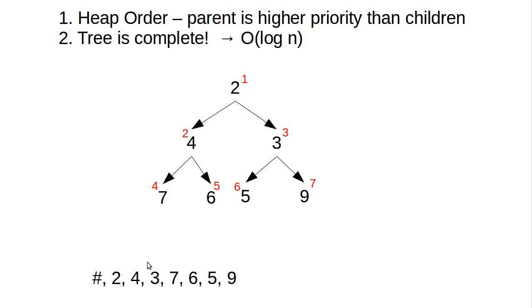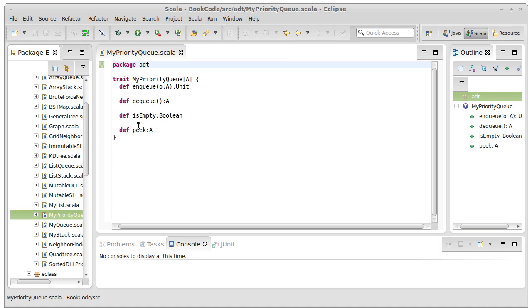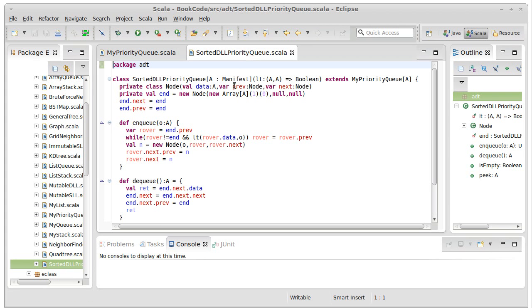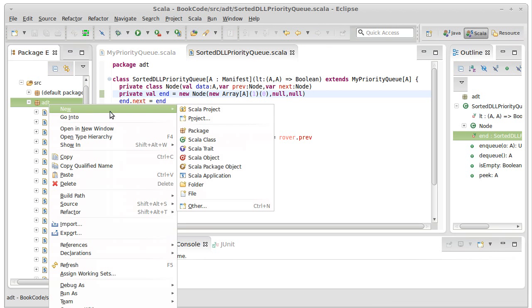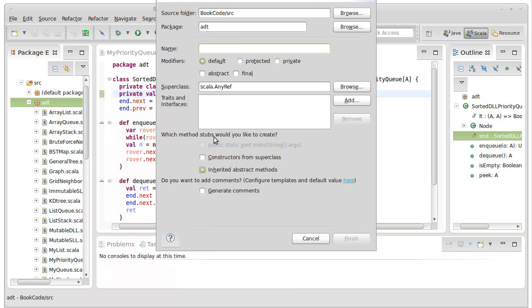So given this, we now have enough information that we can actually start to consider coding our binary heap. It's going to use the same interface we had before for our priority queue, but we're going to actually base it upon an array. Previously we have written a priority queue that has an enqueue, a dequeue, an isEmpty, and a peak, and we even wrote a sorted doubly linked list based priority queue. And now we want to create another priority queue,